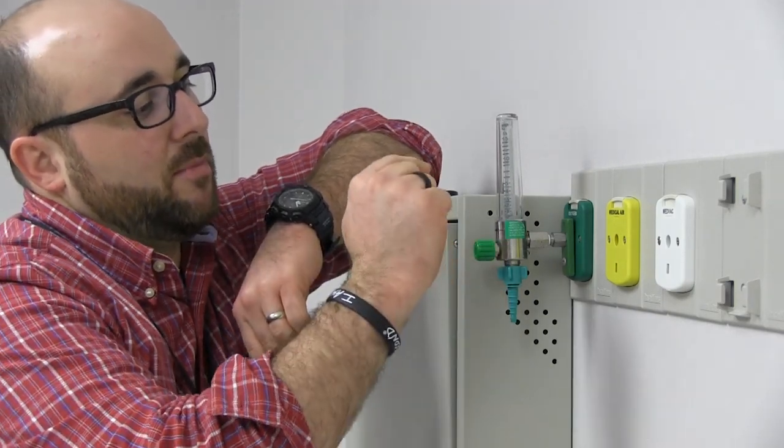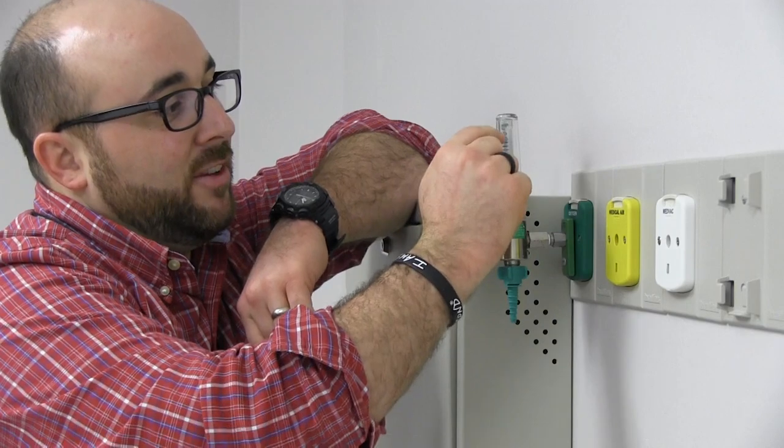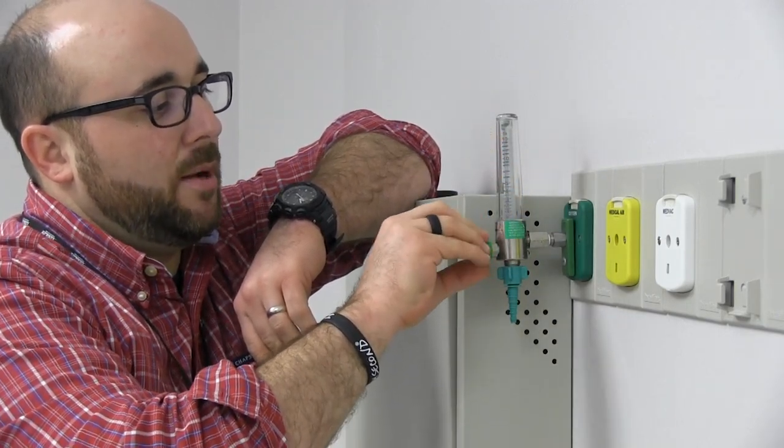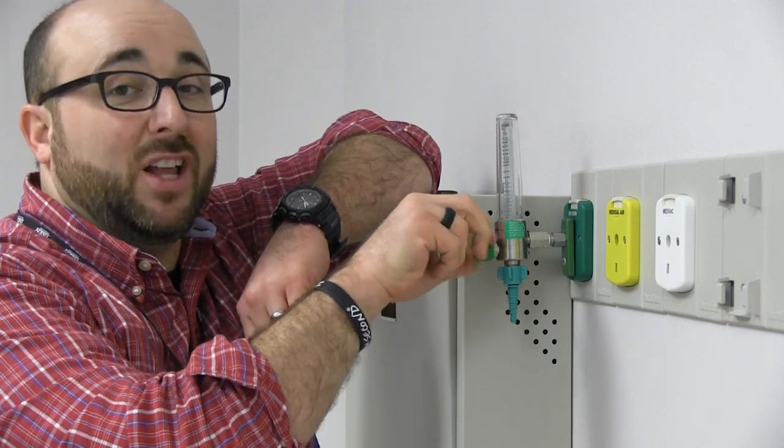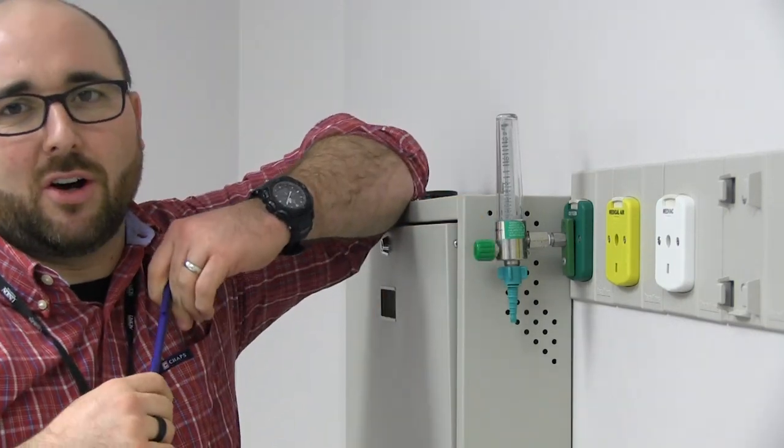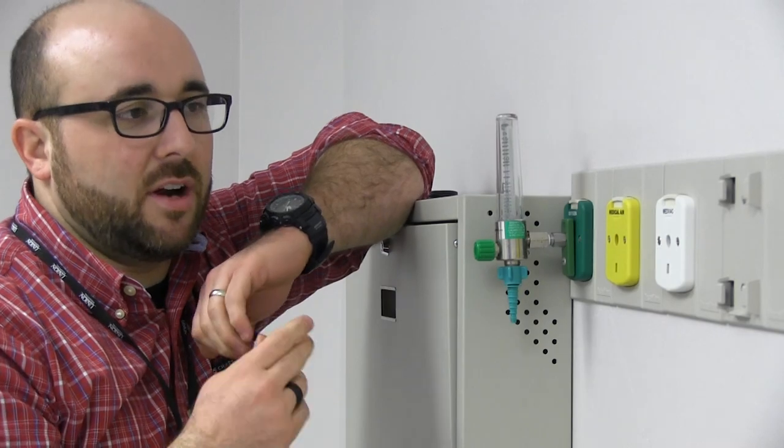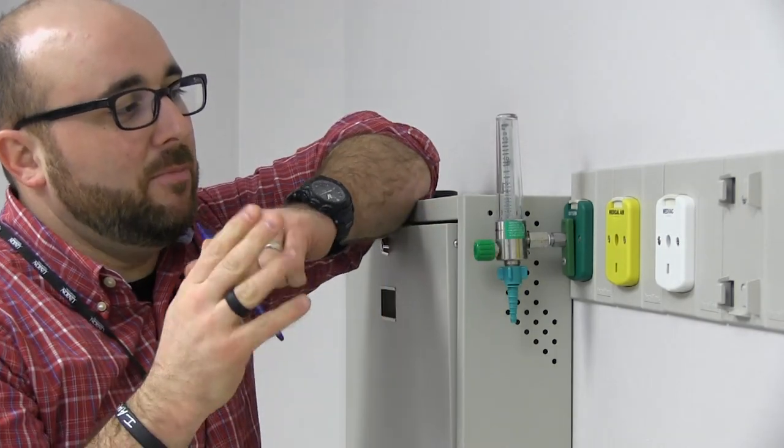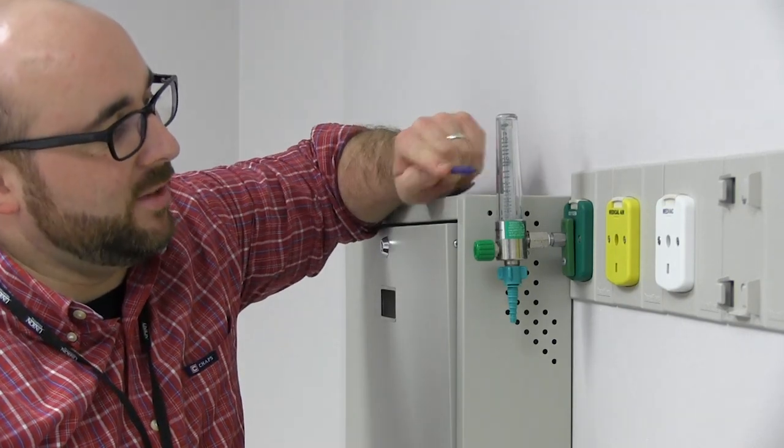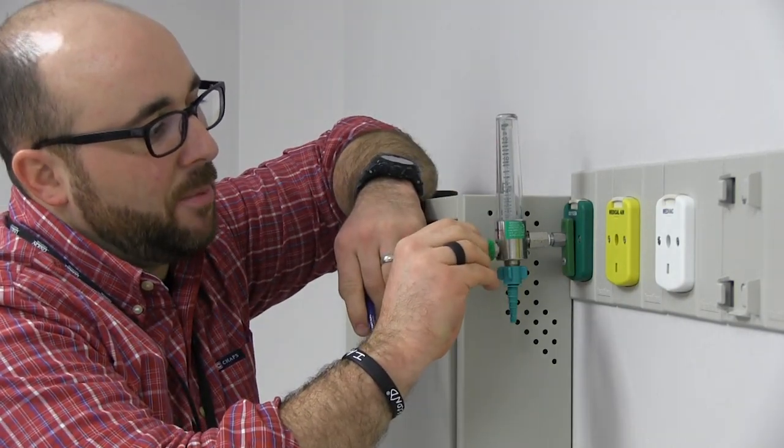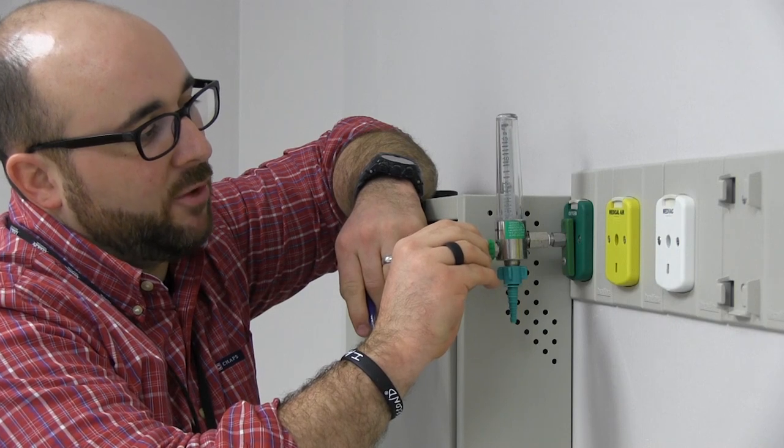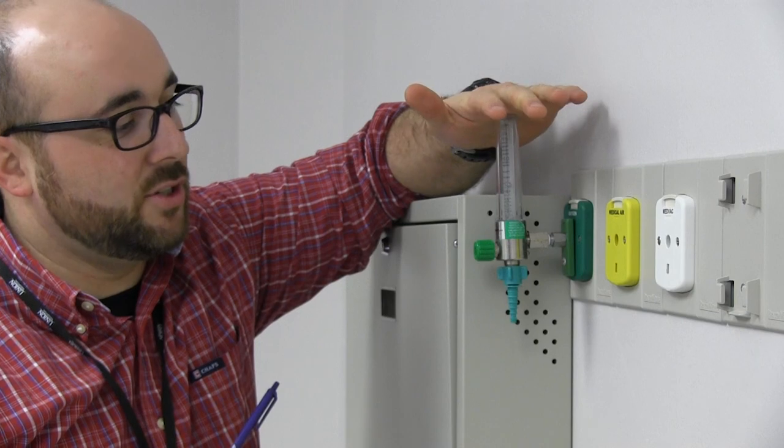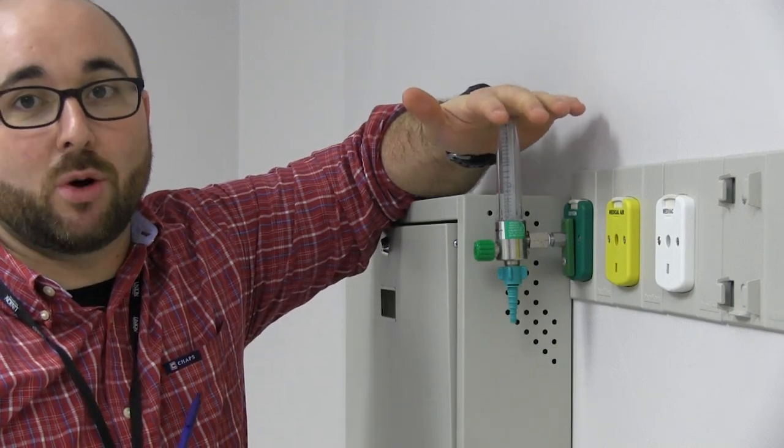This standard flow meter is from one liter to 15 liters. If it goes all the way to the top, which is very loud, we call it flush, and that's usually up to 40 liters. We don't do that very often. Usually it's anywhere from one to 15 liters. How do you measure it? There's a ball inside of it, and this ball is measured by the center of the ball, and it'll be on the specific line for the liter flow.